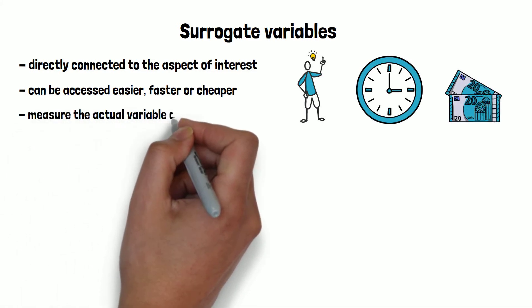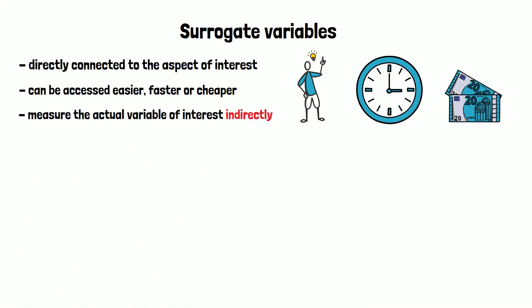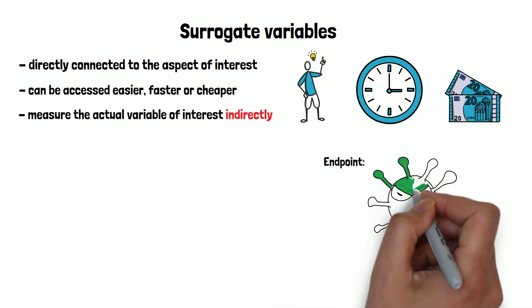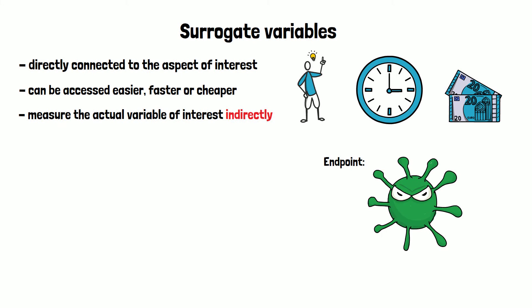Therefore, they are used to measure the actual variable of interest indirectly. For example, the endpoint of a trial investigating a medication to treat cancer could be the reoccurrence of cancer after one year of therapy.